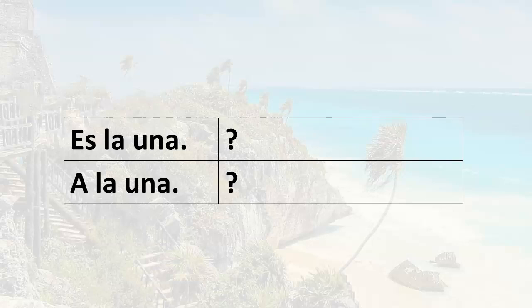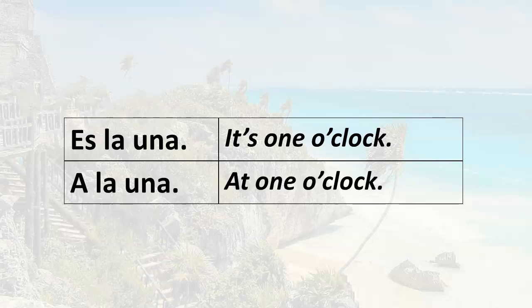Es la una means it's one o'clock. So remember, es la una to express the time. A la una, on the other hand, means at one o'clock. So when you're talking about the time at which an event is occurring, you would use a.